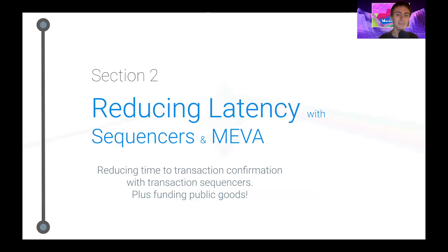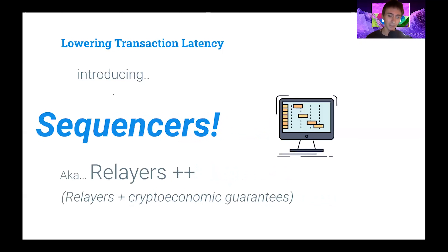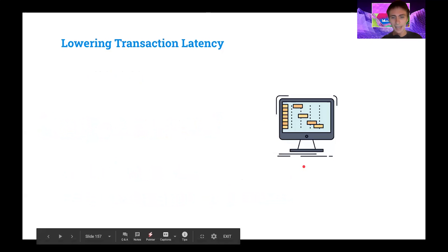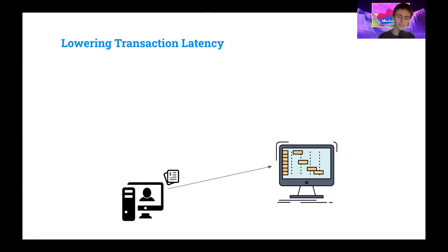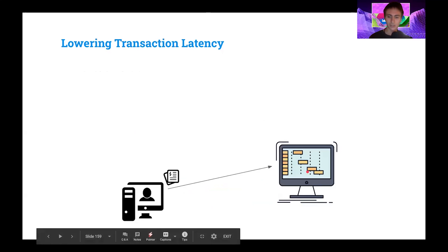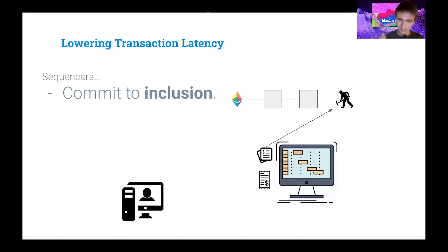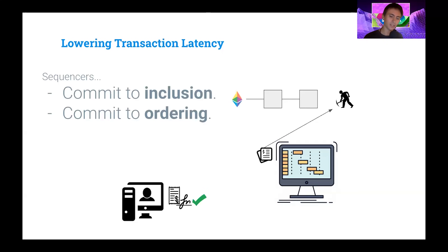Now let's talk about reducing latency with sequencers and MEVa. A sequencer is basically a relayer plus crypto-economic guarantees. A user sends a transaction to the sequencer, which then sends it directly to the Ethereum chain. But before doing that, the sequencer signs a receipt committing to the inclusion and ordering of the transaction, and sends that receipt back to the user. The user verifies that the signature checks out and is from the sequencer — the transaction is included and everything is good.